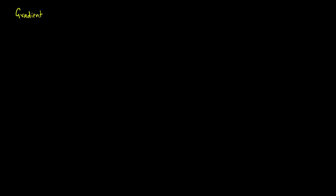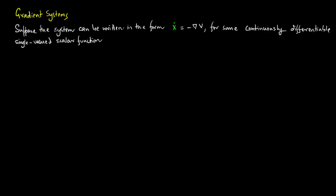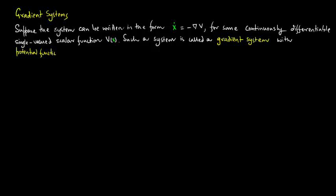Let us look at gradient systems. Suppose a system can be written in the form X-dot equals minus del V, for some continuously differentiable single-valued scalar function V of X. Such a system is called a gradient system with potential function V.